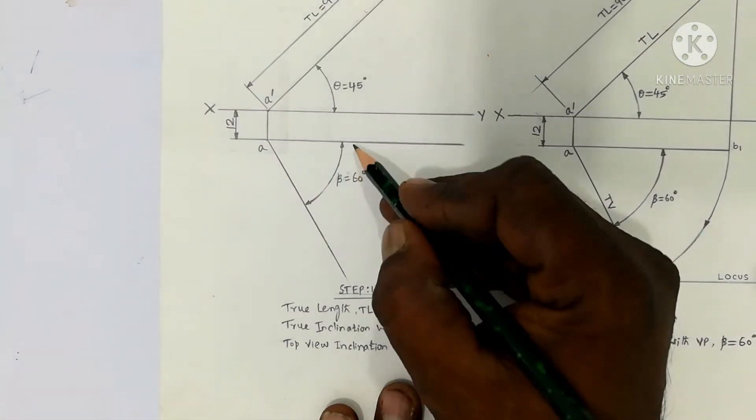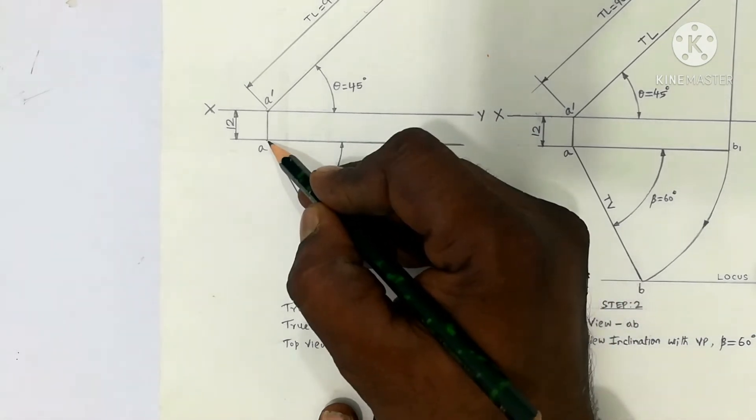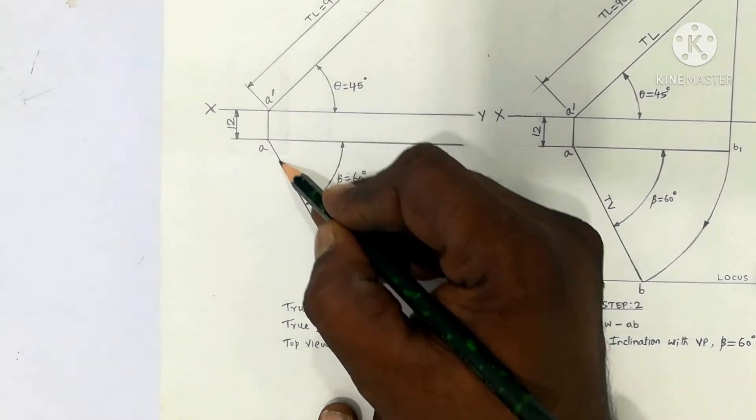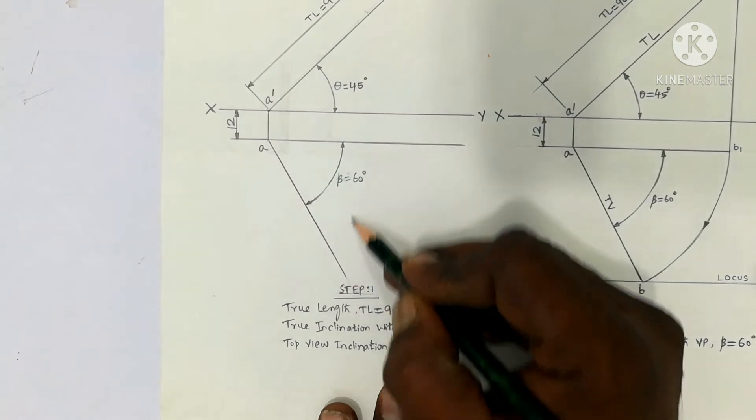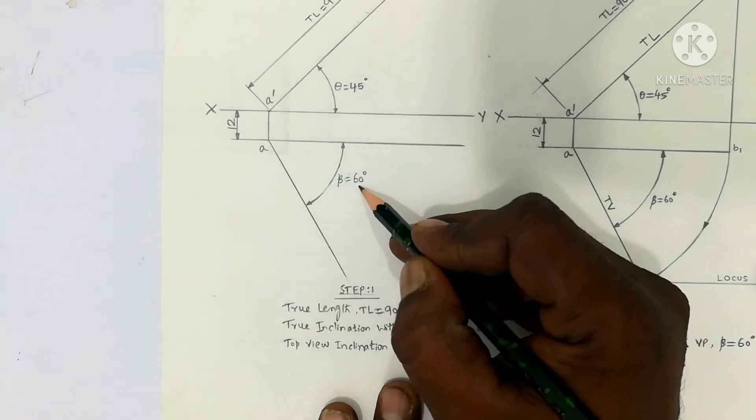Next is the top view angle, 60 degrees. With A as the center of your protractor, draw an inclined line at 60 degrees. That is the top view. This is the top view inclination.